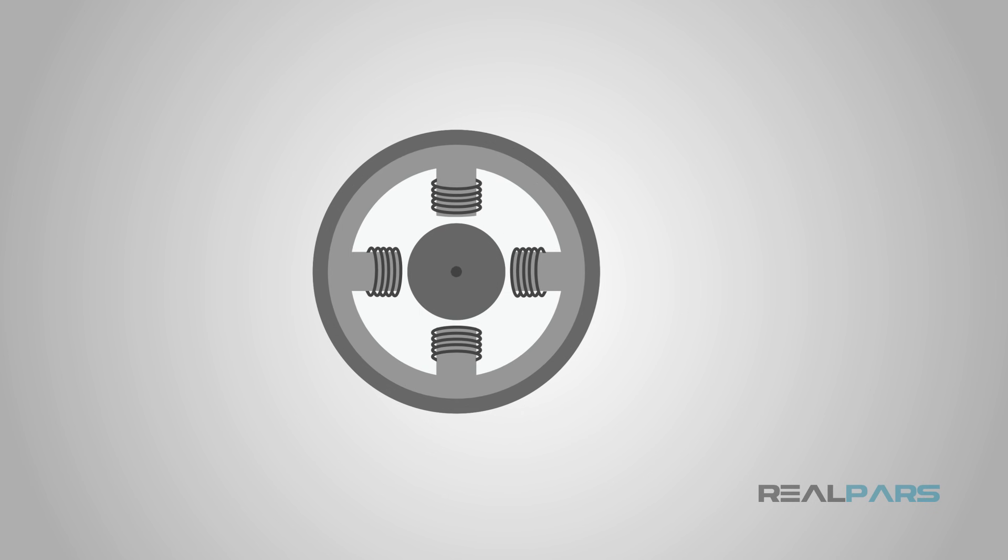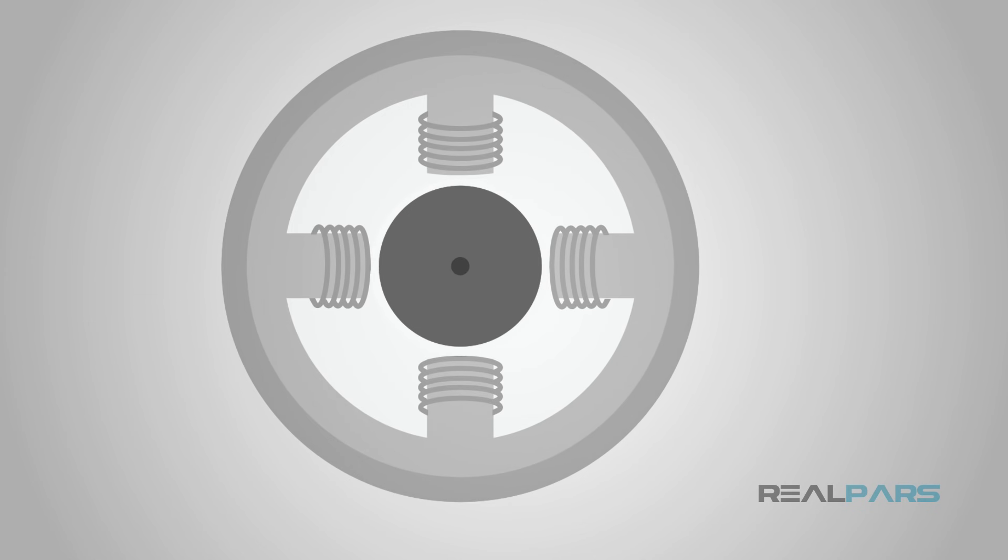Stepper motors have a permanent magnetic rotating shaft, called a rotor, and stationary electromagnet surrounding the rotor, called the stator. Stepper motors typically have 50 to 100 electromagnet poles, pairs of north and south poles, generated either by a permanent magnet or an electric current.